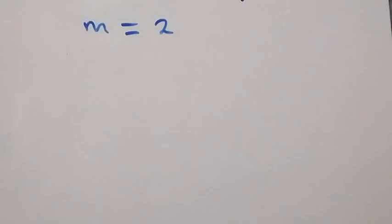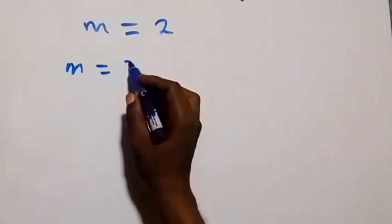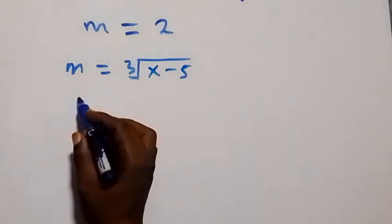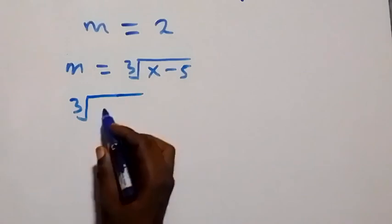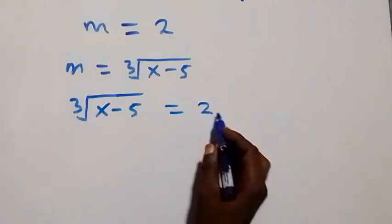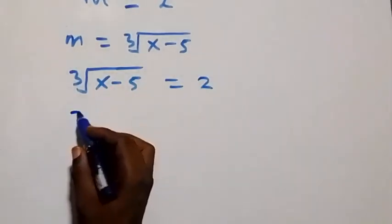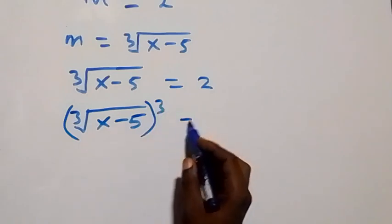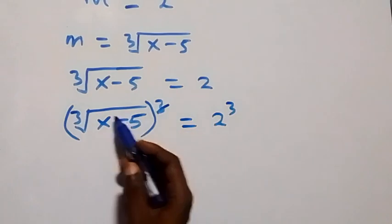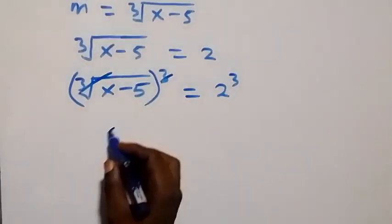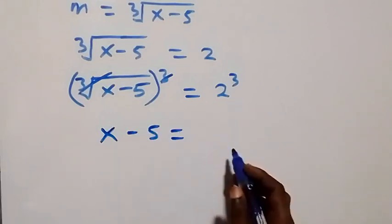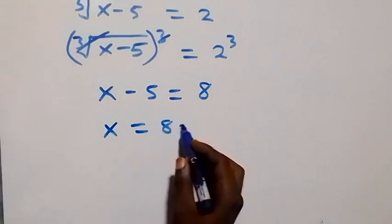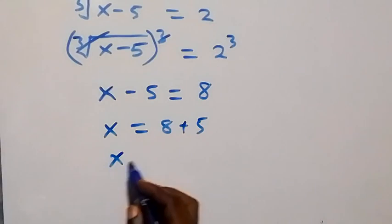From m equals 2, recalling that m equals the cube root of x minus 5, we have the cube root of x minus 5 equals 2. Taking the cube on both sides, x minus 5 equals 2 cubed, which is 8. Therefore x equals 8 plus 5, which gives us x equals 13.